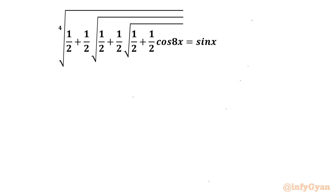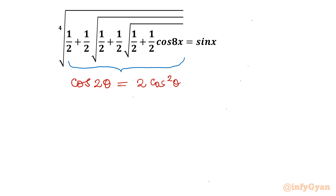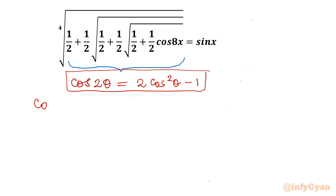I will begin with the LHS. I am going to simplify this value first, and that simplification will be based on the trigonometric identity — the cosine double angle formula. We know that cos 2θ is equal to 2 cos² θ minus 1. This is the identity I will use here. So for cos 8x, the formula gives 2 cos² 4x minus 1.